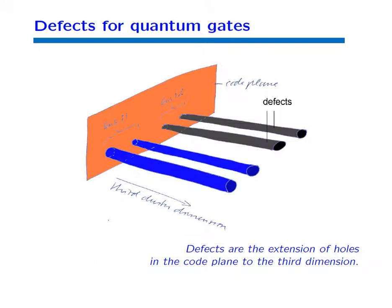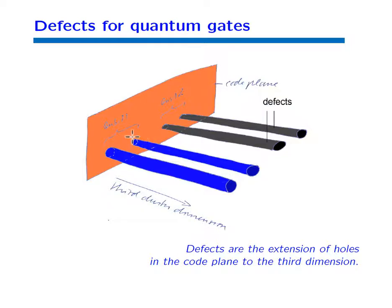Now let us bring back the third dimension. The holes of the 2D code surface extend into the third dimension, becoming world lines of holes. In the context of 3D cluster states, we call these world lines of holes 'defects.' When defects just move in parallel, nothing happens — the code surface stays the same — and this implements fault-tolerant memory on the encoded qubits.